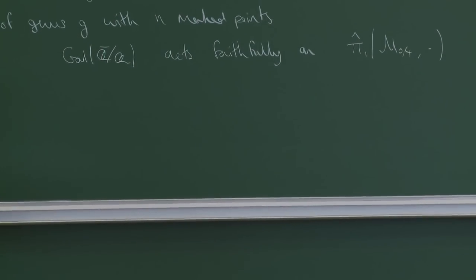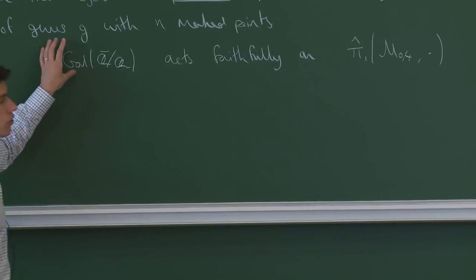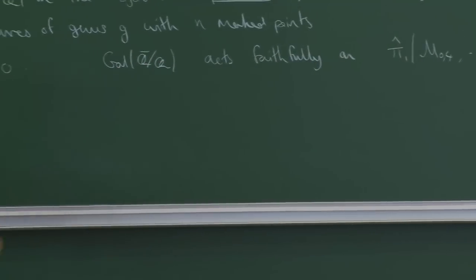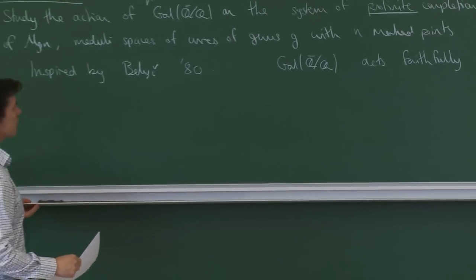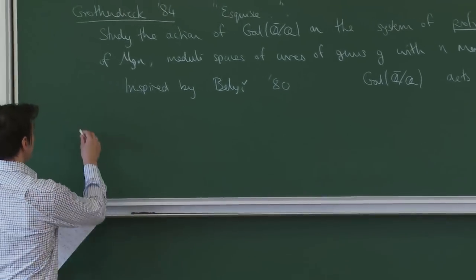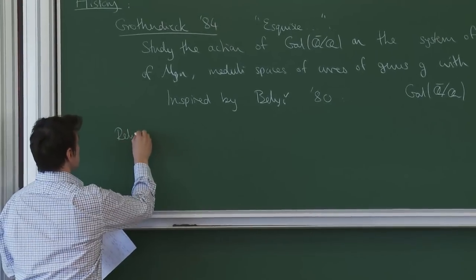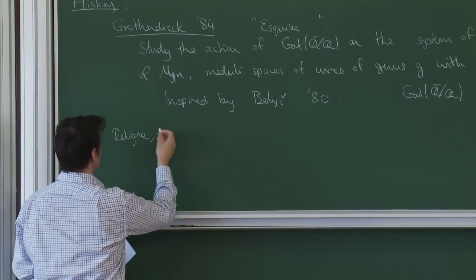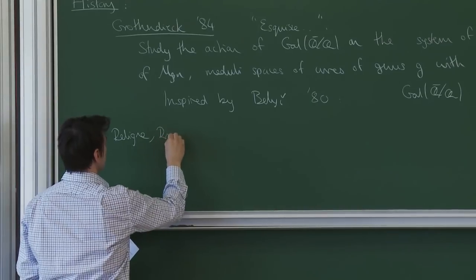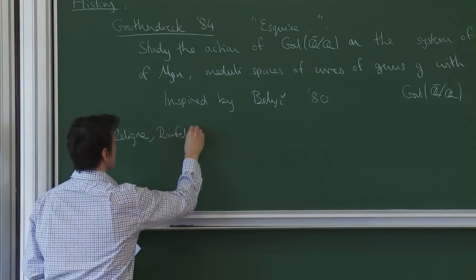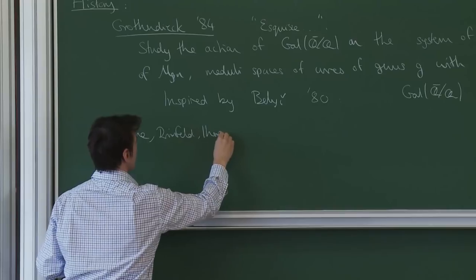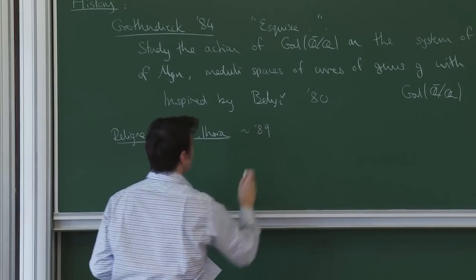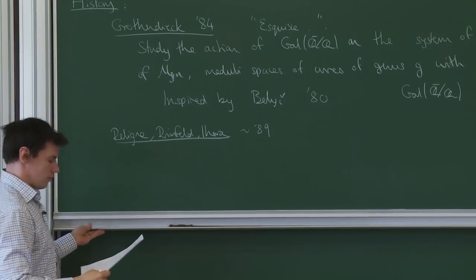Grothendieck's hope was that you could try to understand the absolute Galois group geometrically, and that inspired a lot of work. But the point of view changed significantly around 1989 when Deligne, Drinfeld, and Ihara independently changed perspective somewhat.